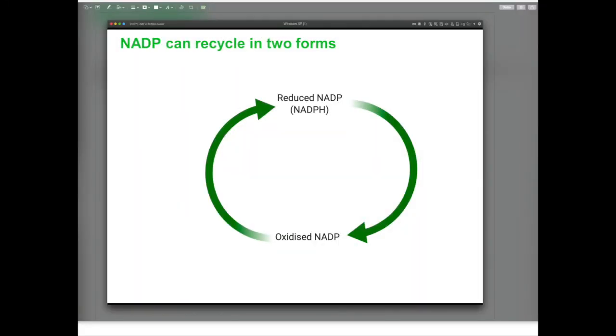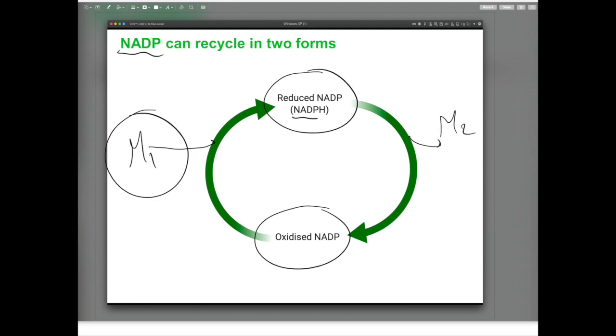Just like ATP, NADP can also be recycled into two forms. There is the oxidized form, which is simply called NADP. And there is the reduced form, which can also be called NADPH. When molecule 1 loses its hydrogen to NADP, this means that molecule 1 got oxidized. NADPH will now donate its hydrogen to another molecule, we'll call it here molecule 2. So this M2 here will be reduced. And as you can see here, the NADP is now available to carry out another redox reaction.